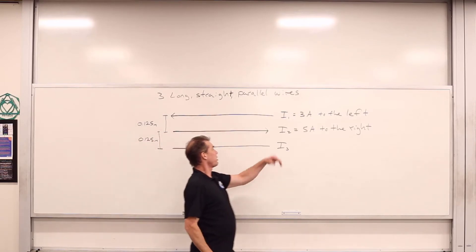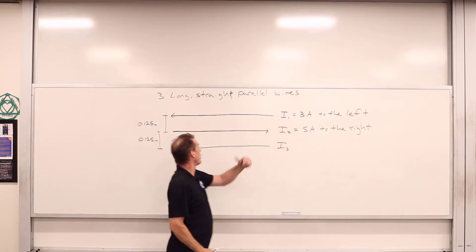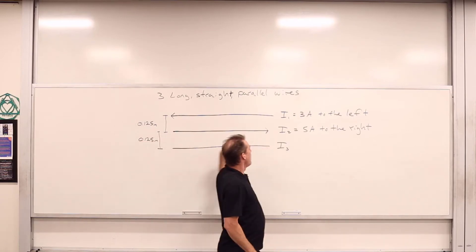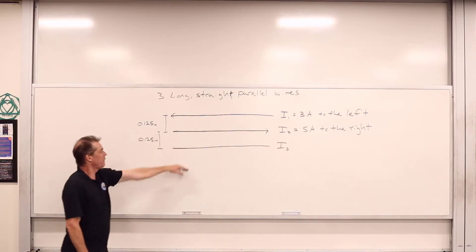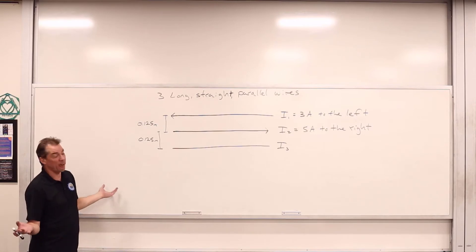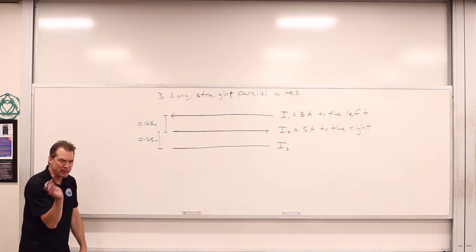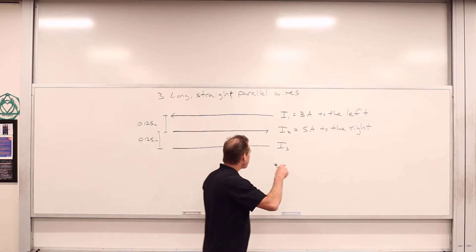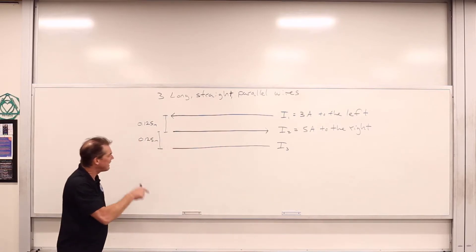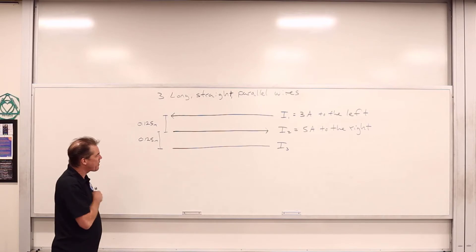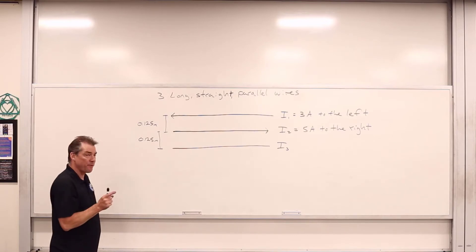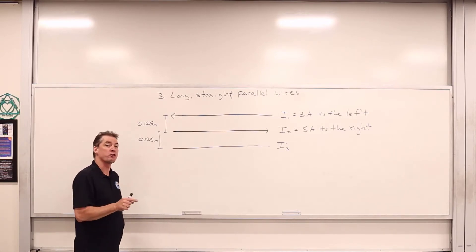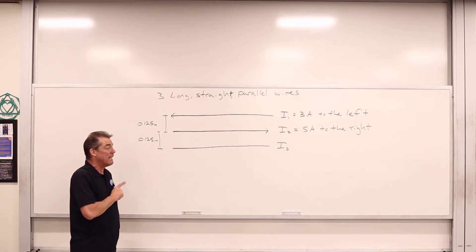We've got the top wire that carries a current I1, 3 amps to the left. We've got the middle wire that carries a current I2, 5 amps to the right. And then we've got this wire here that carries some current I3, yet to be determined. First off, what is the direction of I3 if the force per unit length distributed across I1 is equal to zero?